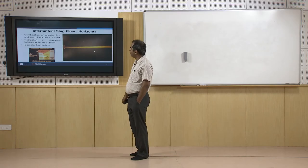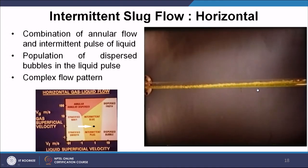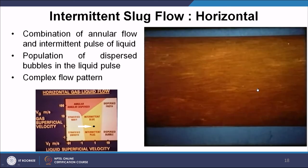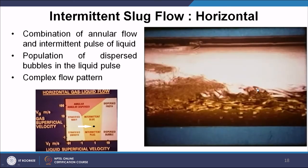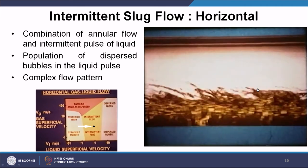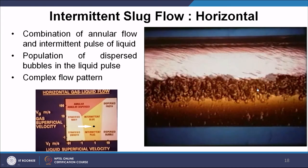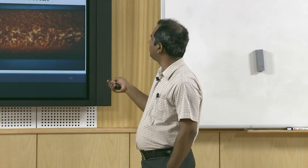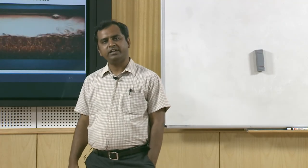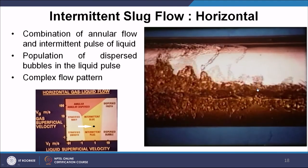Intermittent slug flow is another typical horizontal flow regime. It is a combination of annular flow and intermittent pulses of liquid with lots of bubbles entrapped inside. This complex pattern, with dispersed bubbles in between the liquid pulses, is obtained at intermediate liquid and gas superficial velocities.